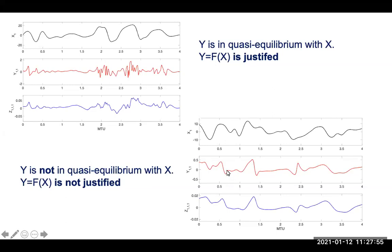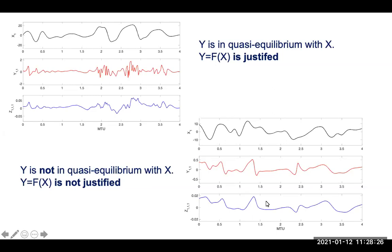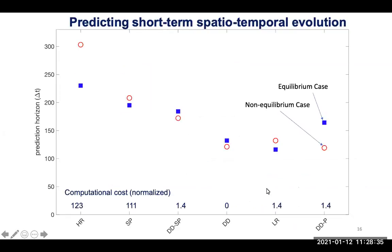In climate dynamics and turbulence, the quasi-equilibrium assumption is not satisfied. We'll call the scale-separated case 'case one' and the more realistic non-equilibrium case 'case two.' In case two, we see where DDSP has the advantage. The red circles represent case two, and this is where the difference between DDSP and DDP really stands out. When you don't have spatial-temporal scale separation — as in all real turbulence and climate models — the super parameterization approach really stands out and demonstrates the advantage of DDSP.